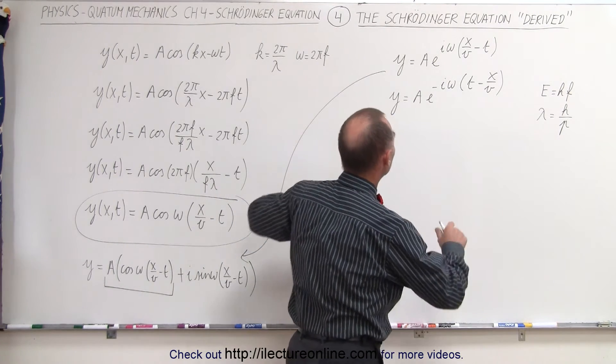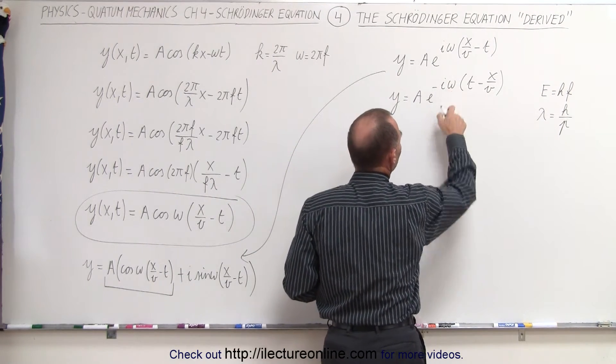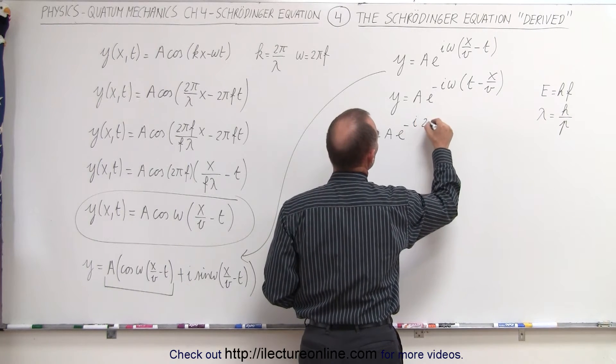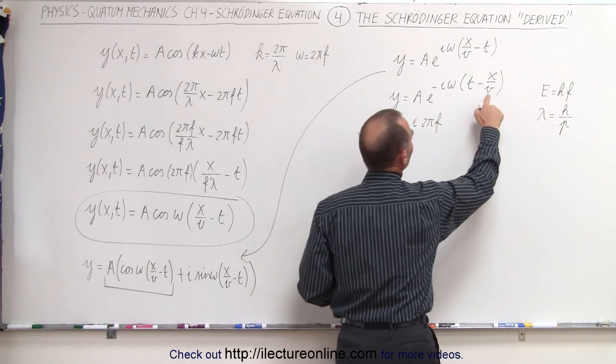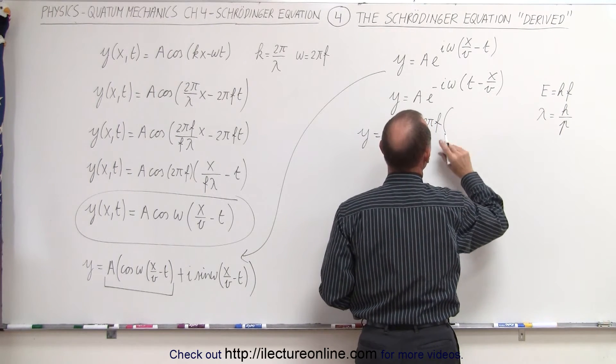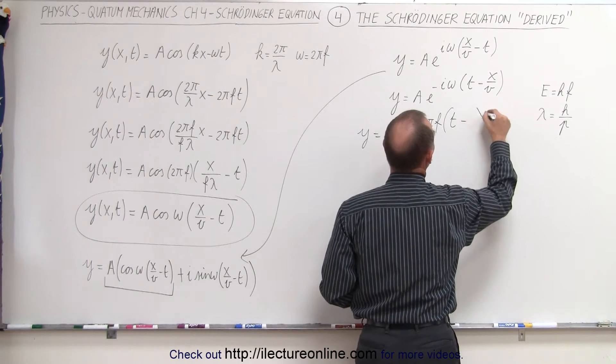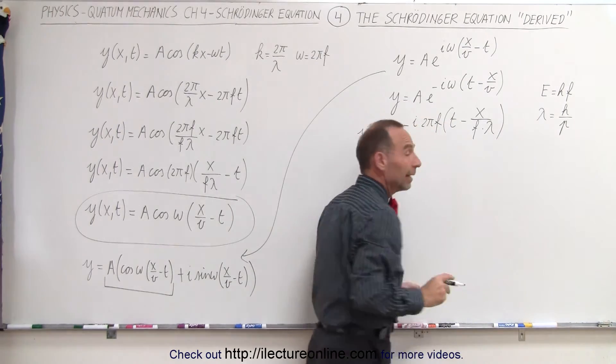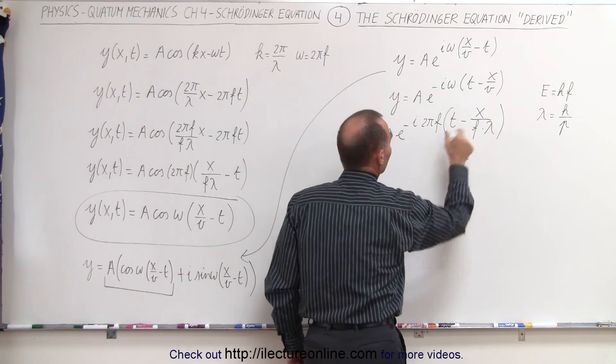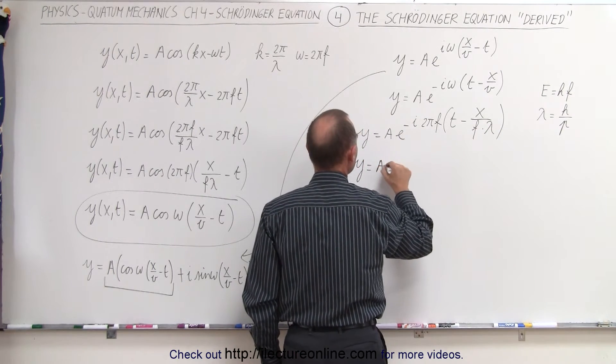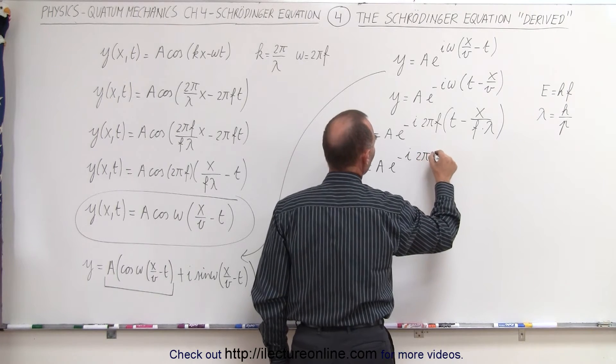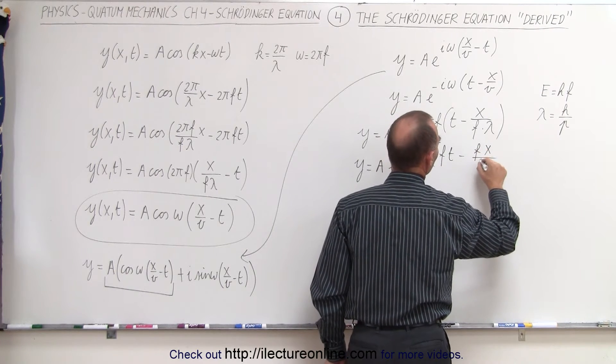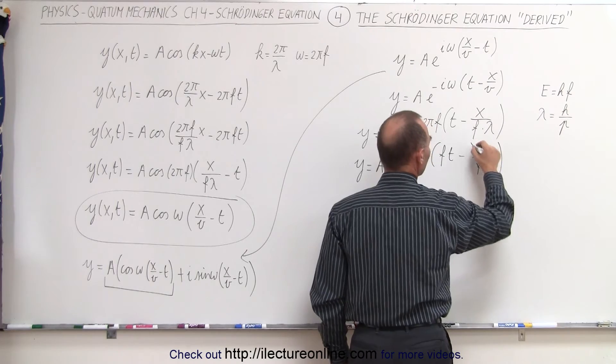So what we're going to do here is take omega and turn that back into 2πf. So we can write y equals A times e to the minus i times 2πf. And we're going to take v and replace it by the frequency times the wavelength. So times, that would be t minus x over, that would be frequency times wavelength. The next thing we're going to do is multiply the frequency inside the parentheses. So we can say that y equals A e to the minus i 2π times f times t minus f times x over fλ. And of course, these f's cancel out.